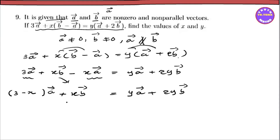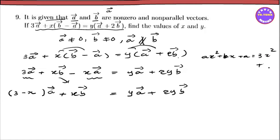This gives us the vector equation. The next step is x squared plus 2x plus a, then 3x squared plus a. So we use 2x to figure out the equation.